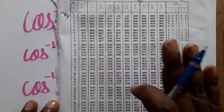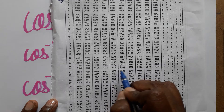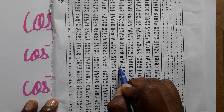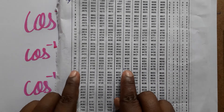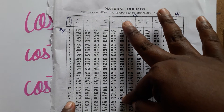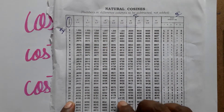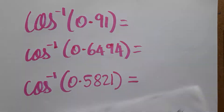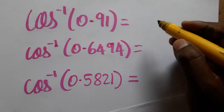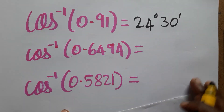First, cosine inverse of 0.91. In the tabular column I search for 0.91, and I find 0.9100. Reading across, that corresponds to 24 degrees in the first column and 30 minutes in the second column. So cosine inverse of 0.91 equals 24 degrees 30 minutes.